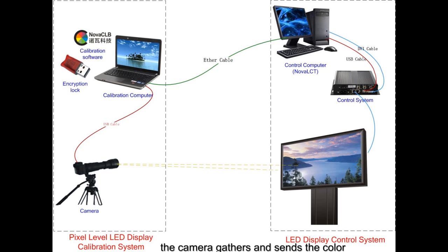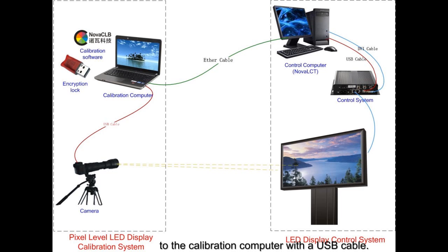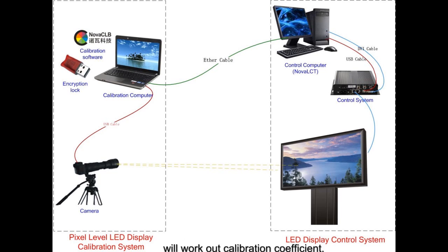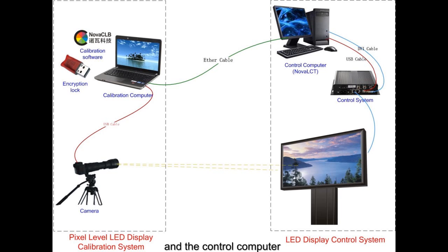The camera gathers and sends the color and brightness information of every LED to the calibration computer via a USB cable. Then the calibration software works out the calibration coefficient and sends it to the control computer.